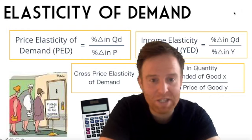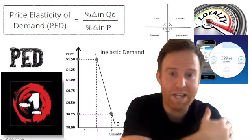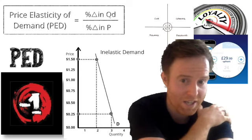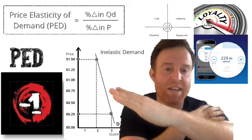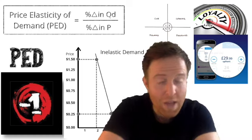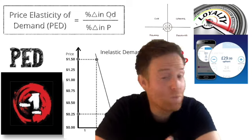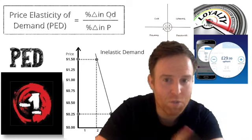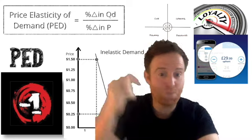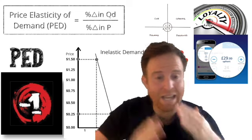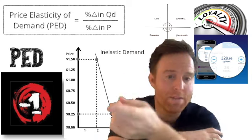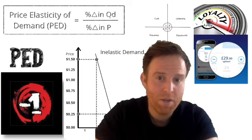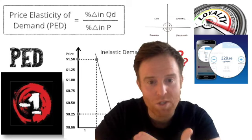Starting with price elasticity of demand, the first thing we need to think about is the demand curve. The demand curve is always sloping downwards — that is absolutely crucial. The reason why it's crucial is because of that inverse relationship between price and quantity demanded. As price goes up, quantity demanded will go down; as price goes down, quantity demanded will go up. So if you've got quantity demanded going up, you've got a positive percentage change. If you've got price going down, you've got a negative percentage change. Therefore your answer is always going to be negative.